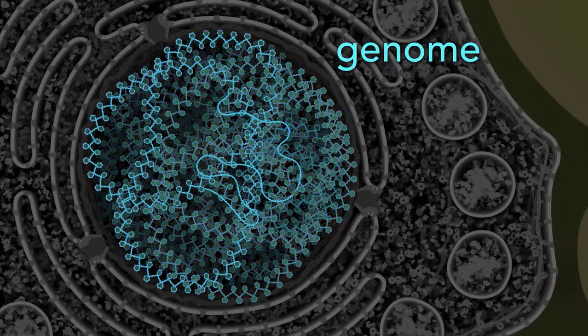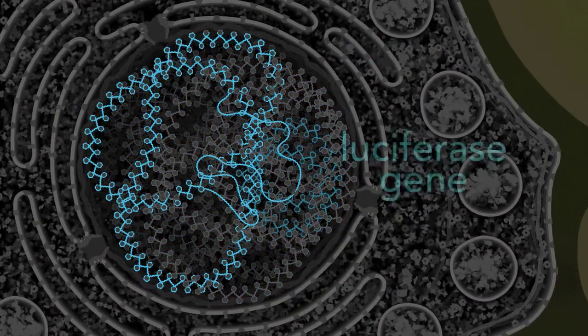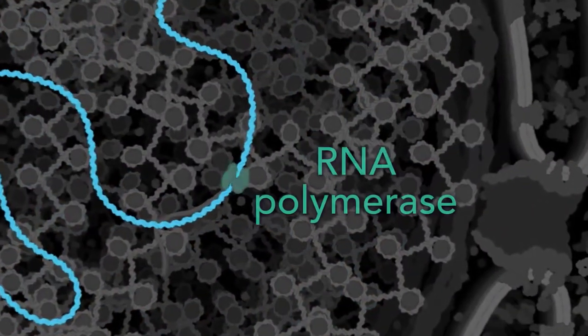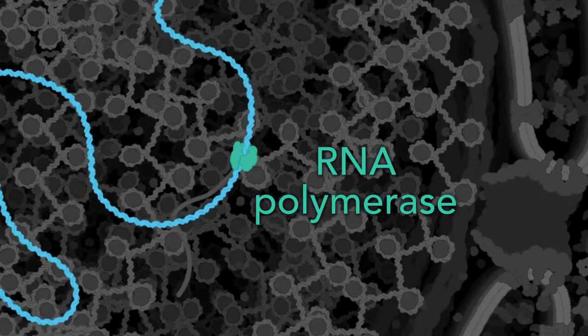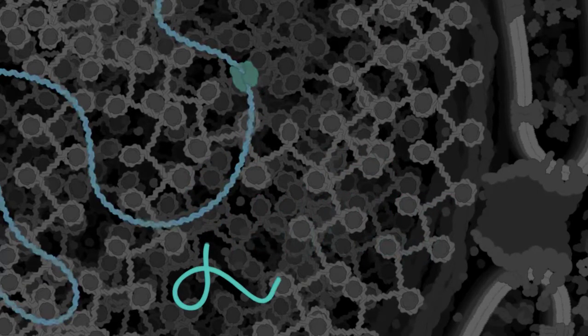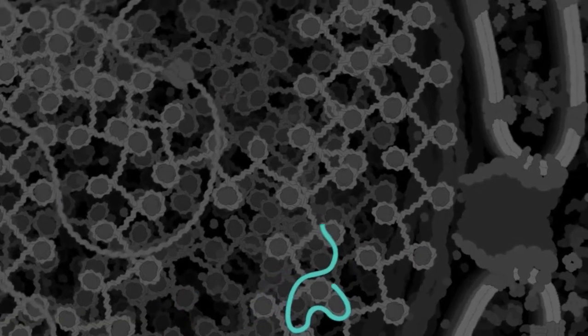One of these genes is a set of instructions for building the protein luciferase. A molecular machine called RNA polymerase makes a messenger RNA copy of the luciferase gene. The gene can be copied many times.